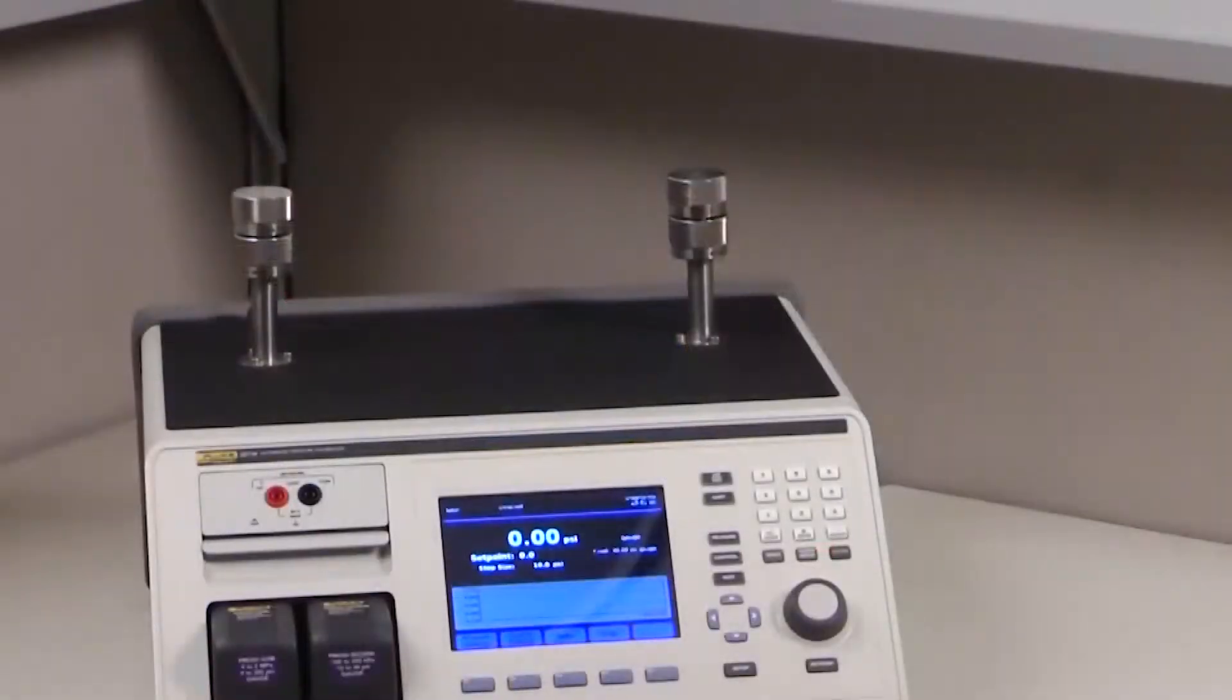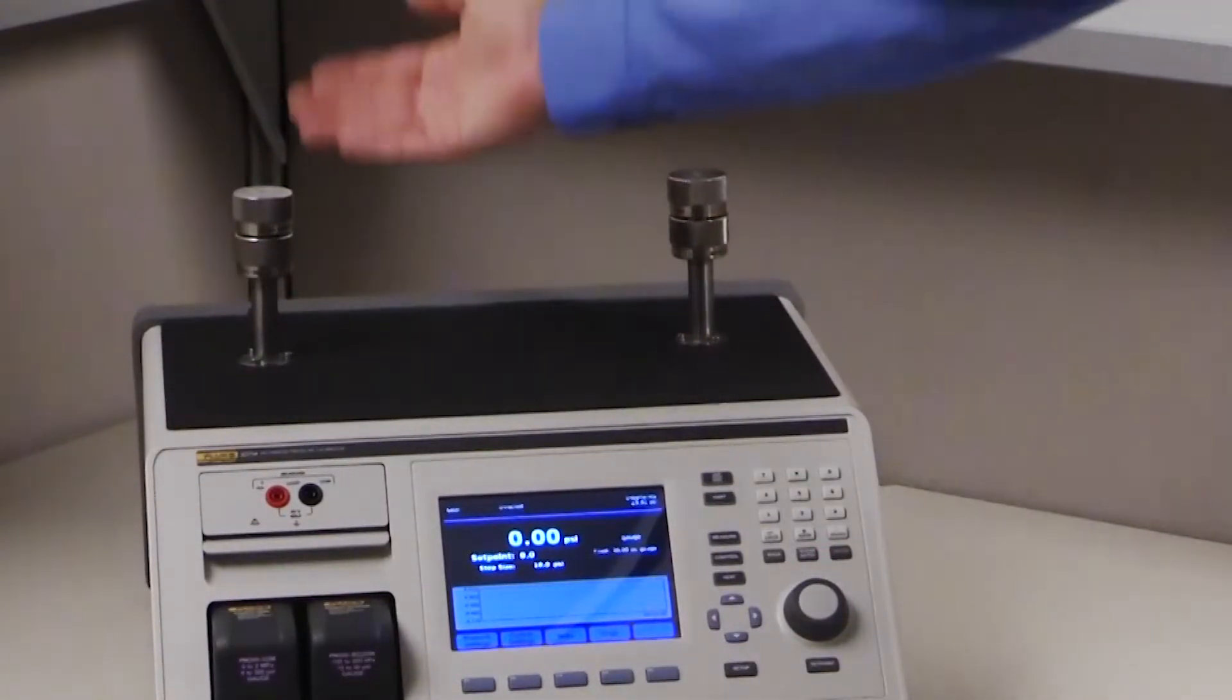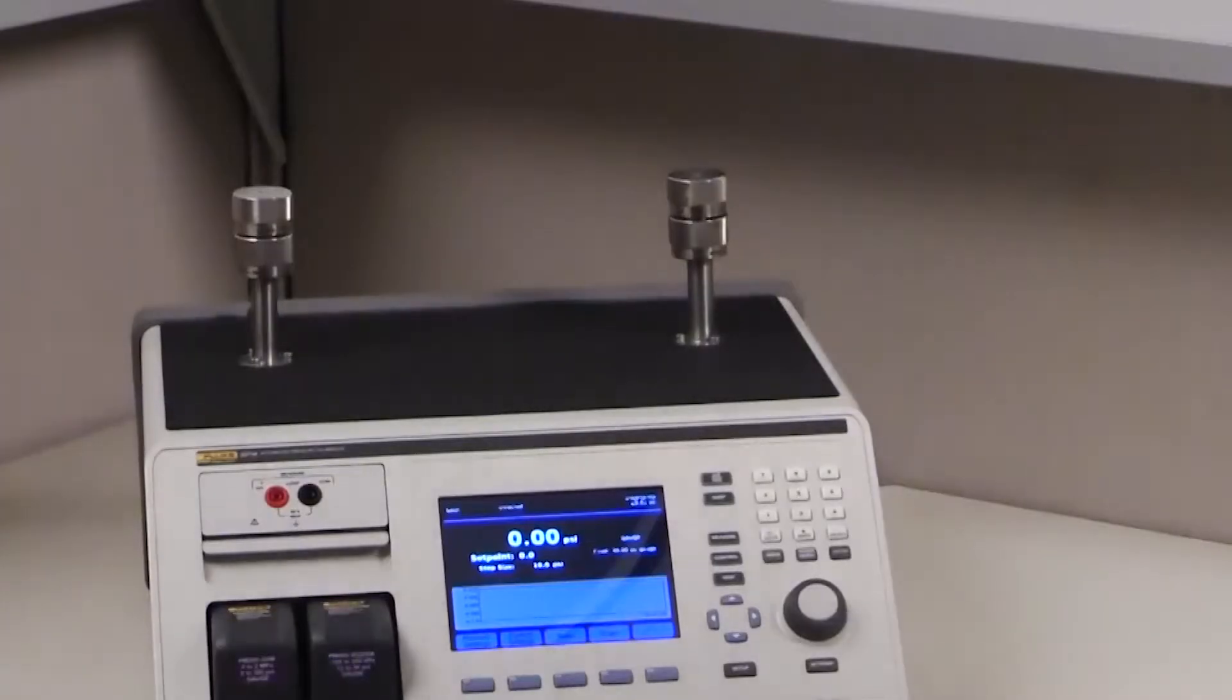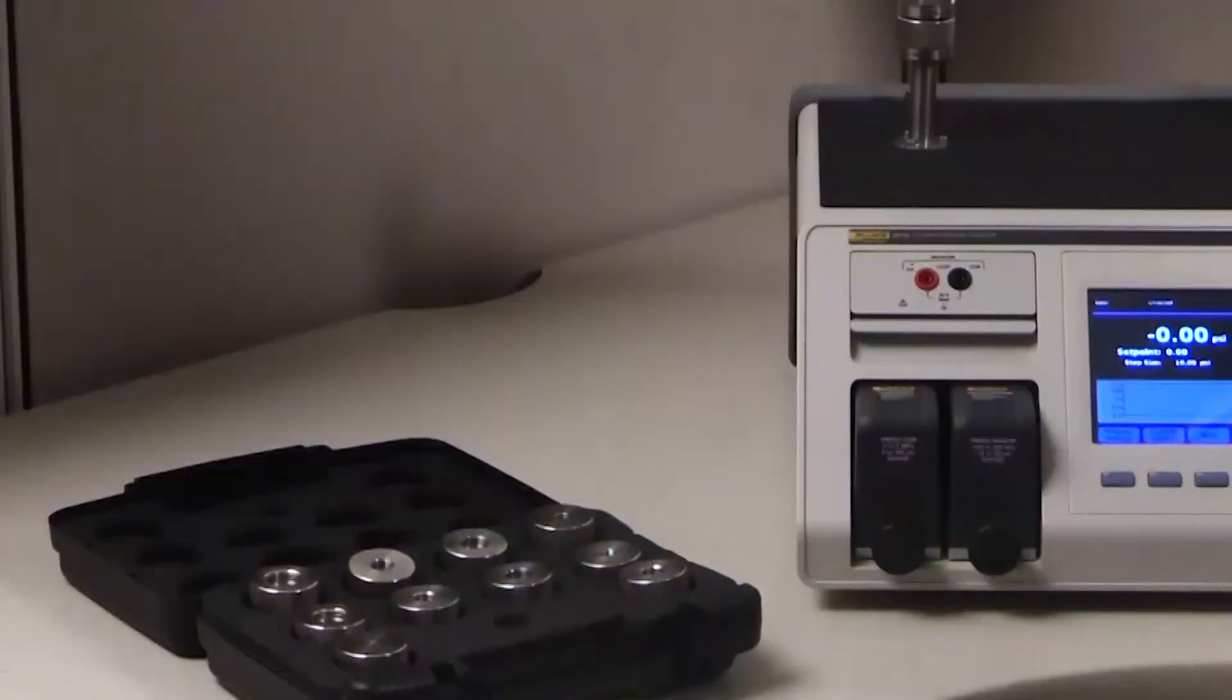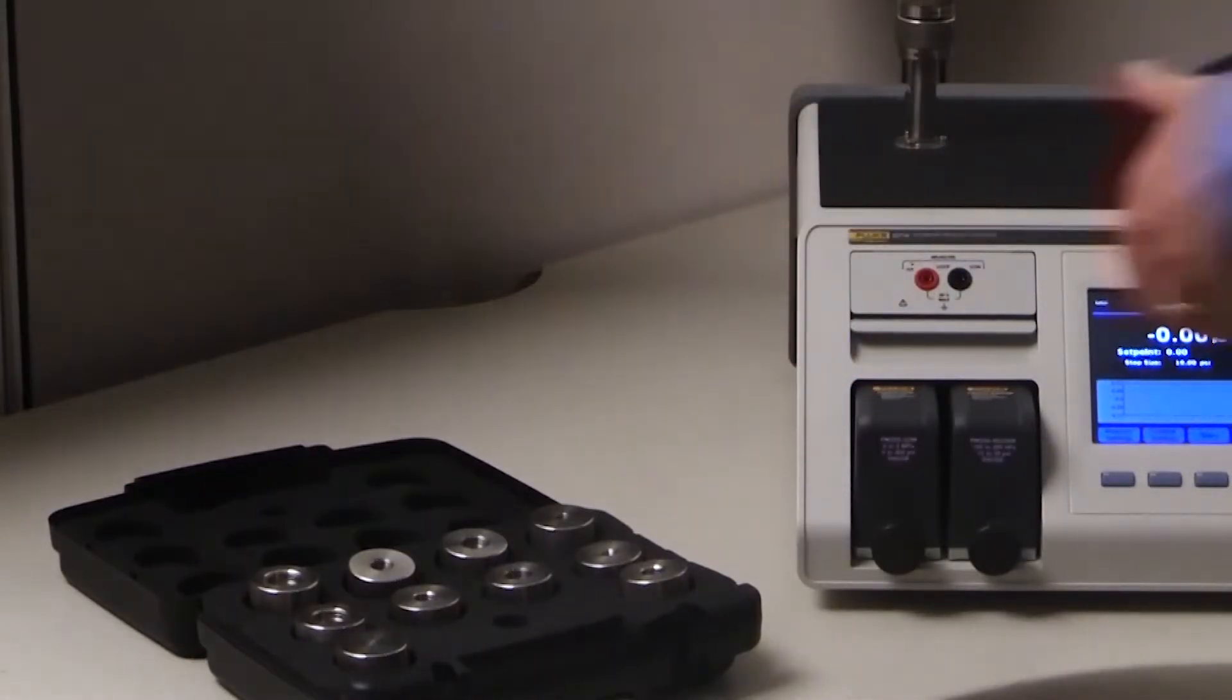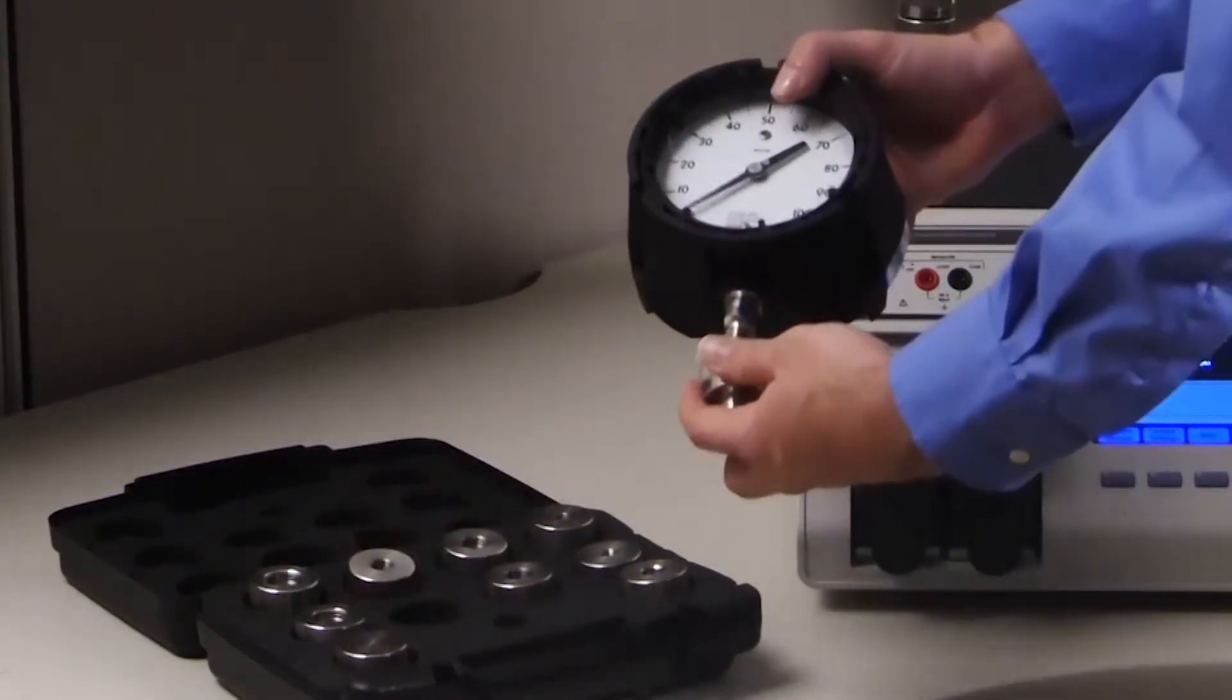To test a pressure gauge, connect it to one of the two vertical test ports on top of the 2271A. The 2271A comes with a number of adapters to connect to common NPT, BSP, and metric sizes.